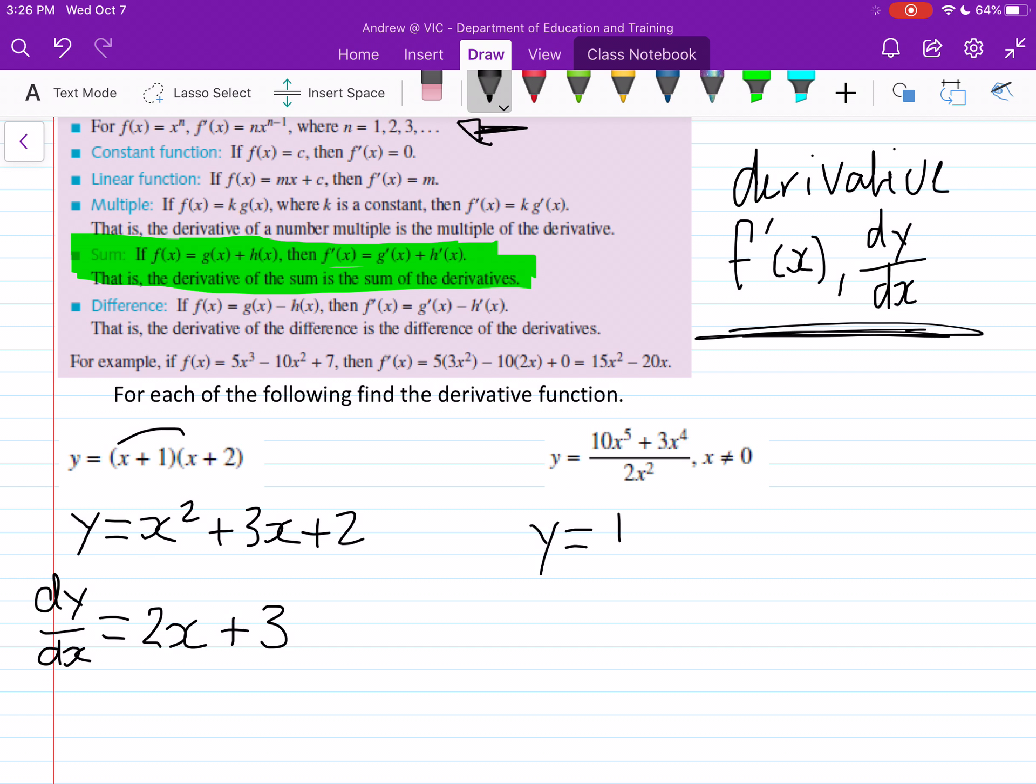So we have 10x to the power of 5 and 2x squared. I'll actually just do the x's first. So you'll notice here we've got x squared here, so that goes into the x to the five. x to the power of 5 drops that down by 2 to make it x to the power of 3.